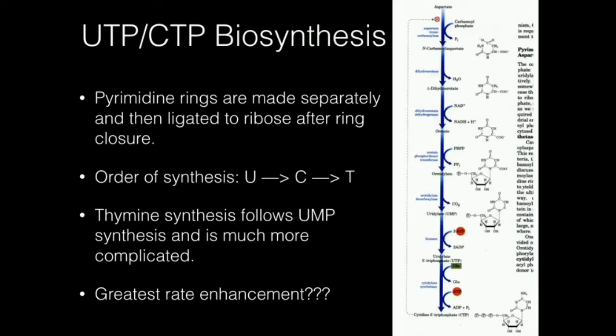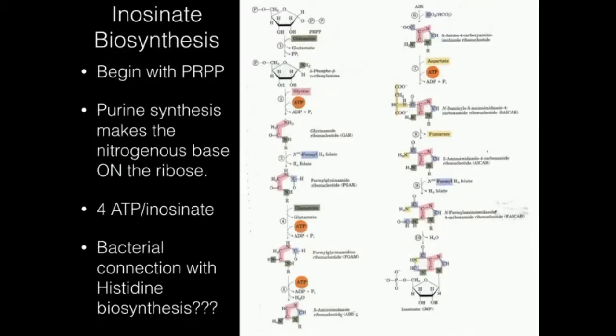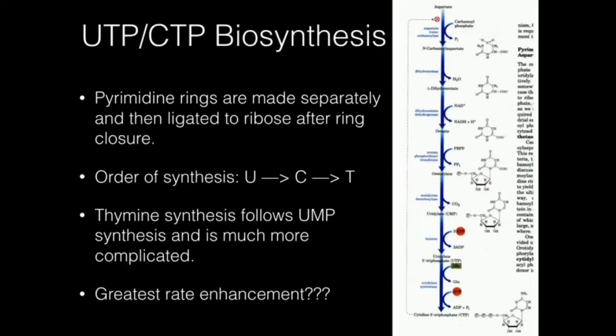Welcome back. In this video, we're going to talk about pyrimidine synthesis, and we're going to see that it contrasts sharply with purine synthesis. When we talked about purine synthesis, the double ring for purines is synthesized on the ribose ring — we actually synthesize the purine nucleus while it's attached to the ribose. But for pyrimidines, once we have the ring and cyclize it — as in the case of orotate — then we attach it to the ribose. So it's a different strategy for making the pyrimidines.